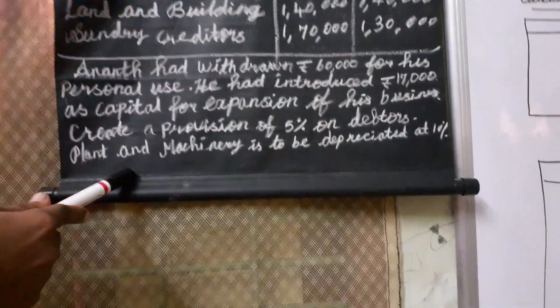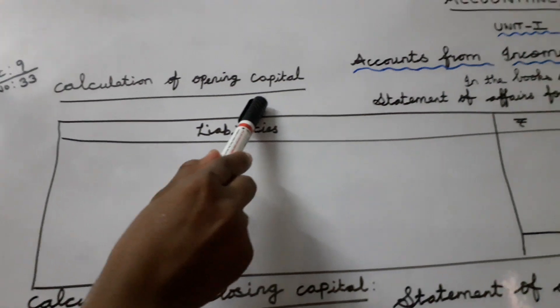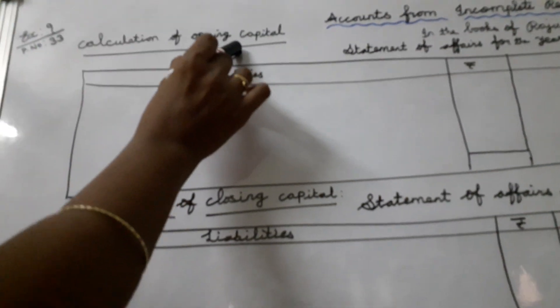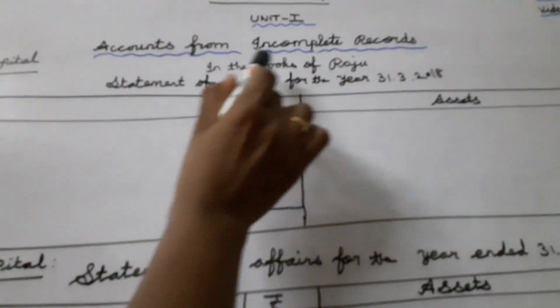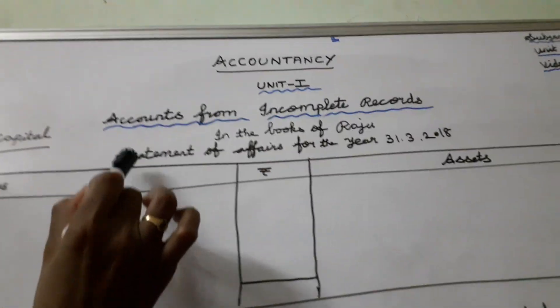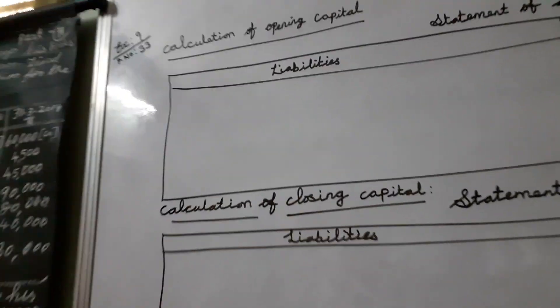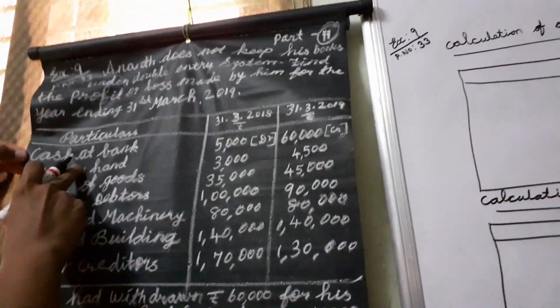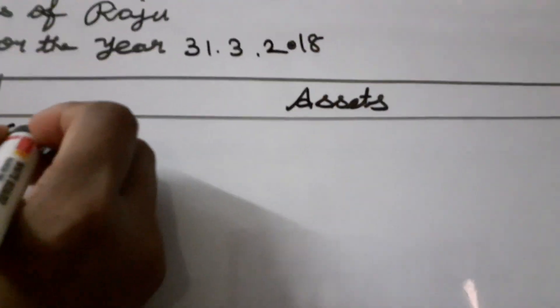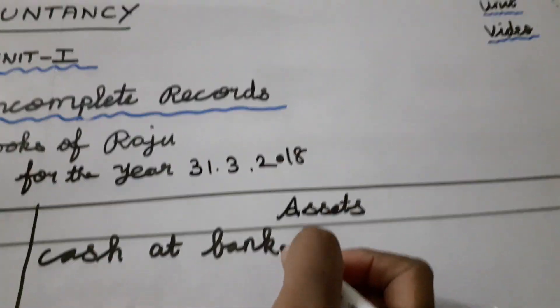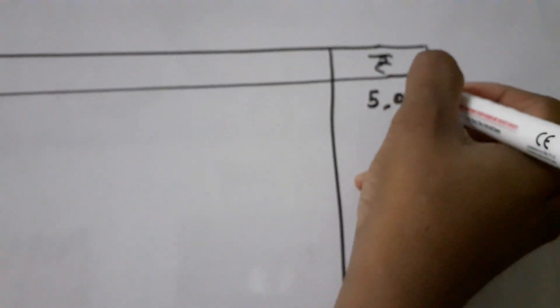Now shall we work out the sum. First, we want to calculate the opening capital. In the books of Raju, write the heading: Statement of Affairs for the year ended 31st March 2018. See the problem one by one. Cash at bank comes on the asset side — cash at bank 5,000.